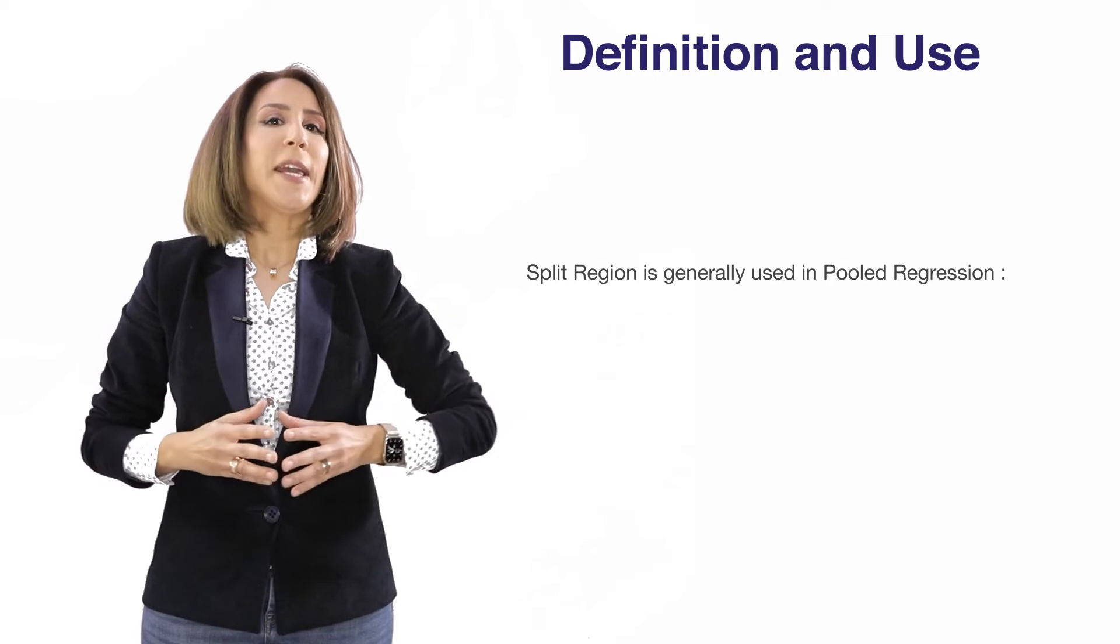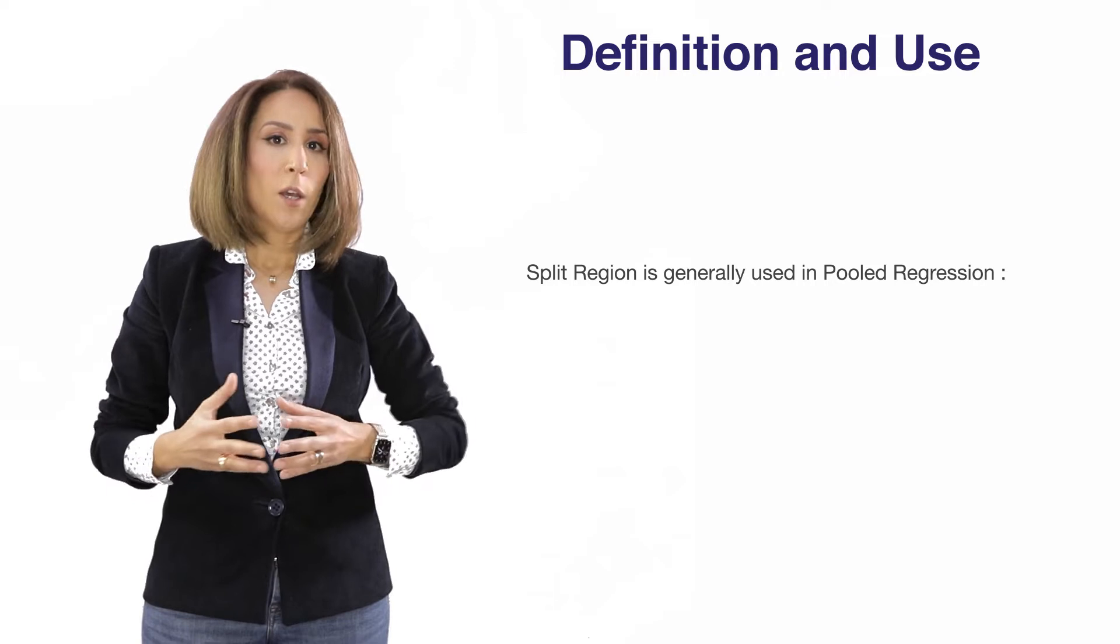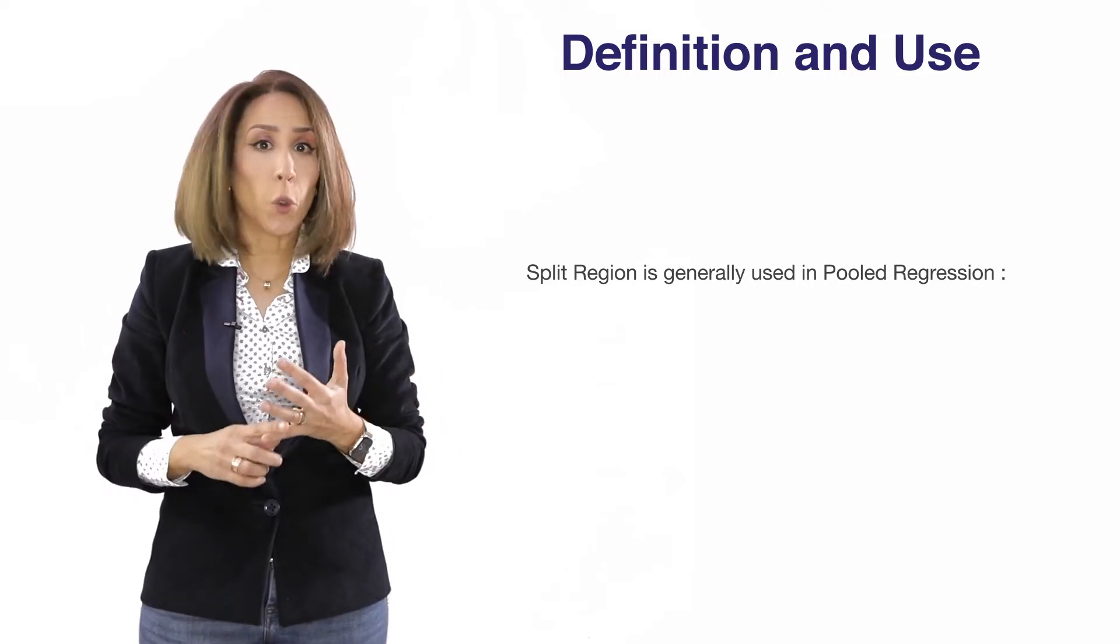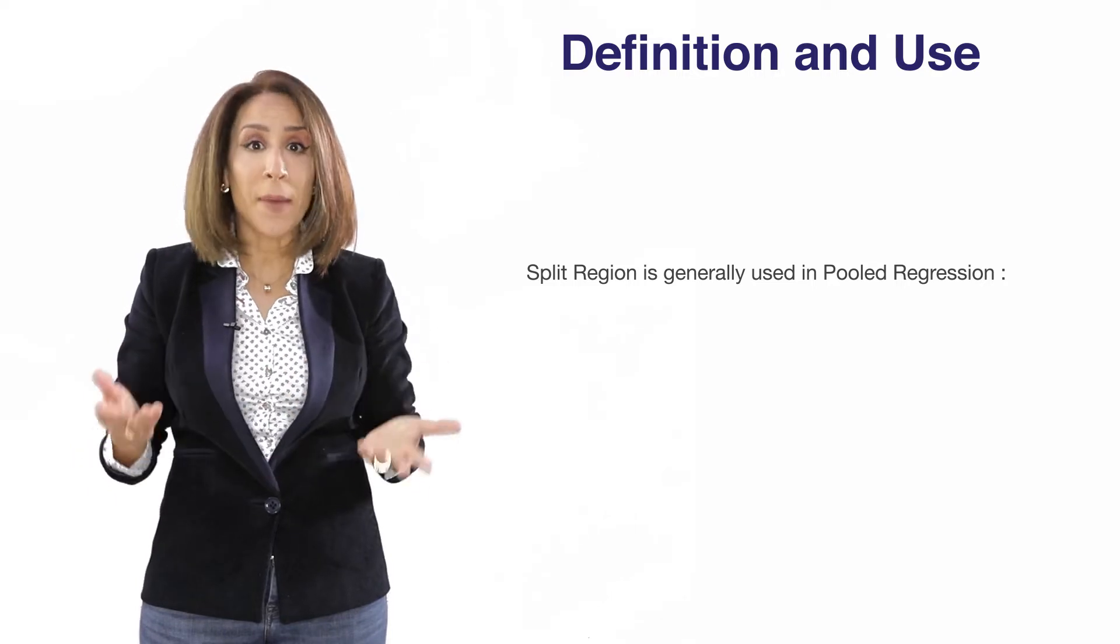Split region. Split region is generally used in the context of regional analysis or pooled regression. For example, we are pooling stores, we are pooling geographical regions or we are pooling DMAs in the states.